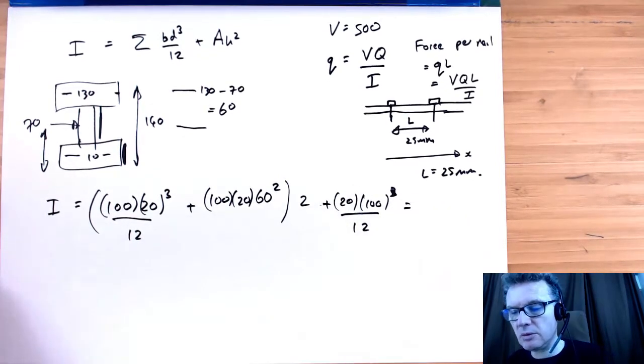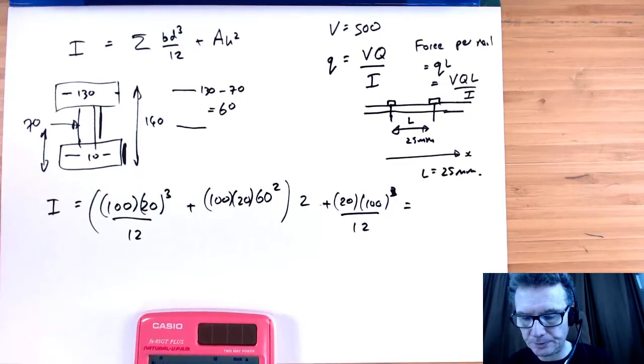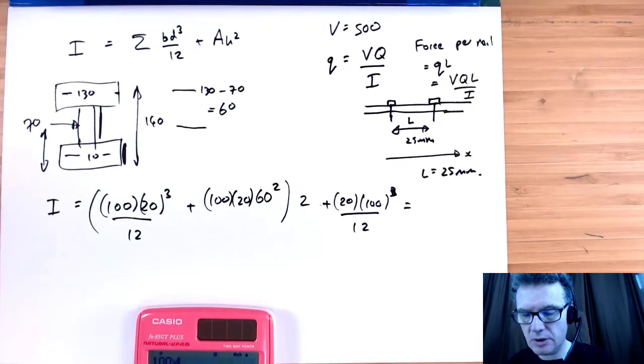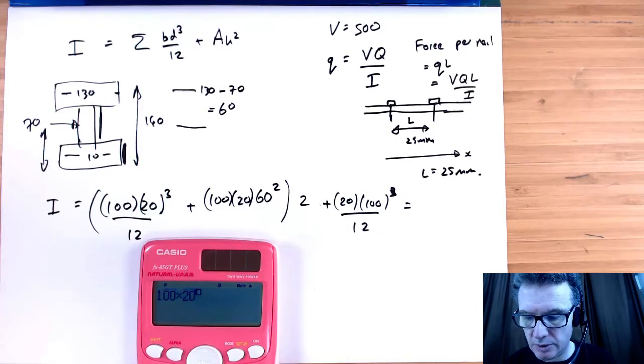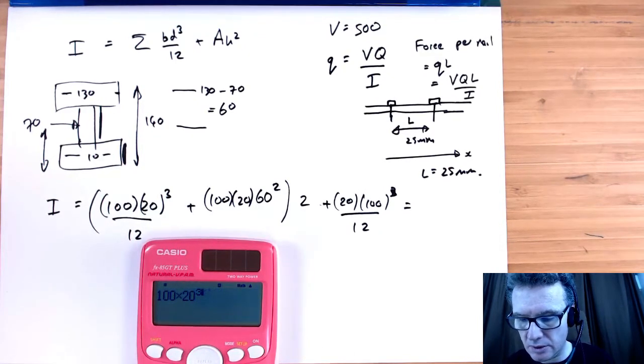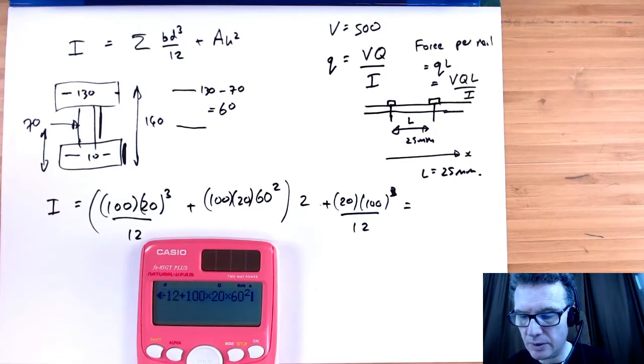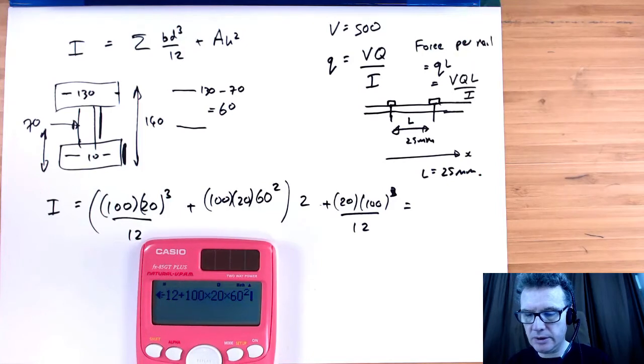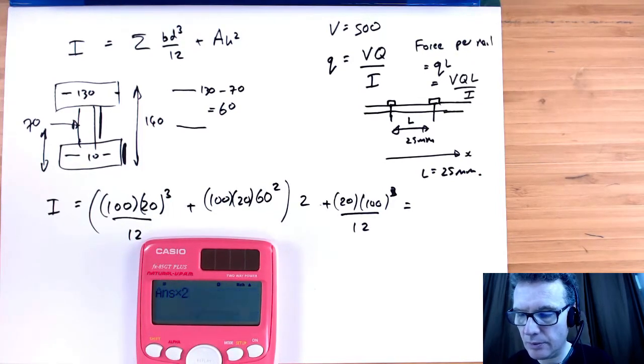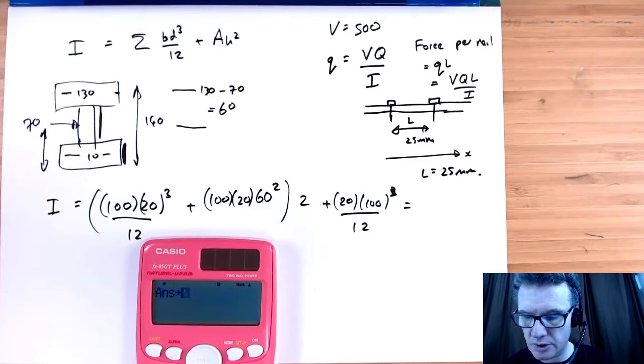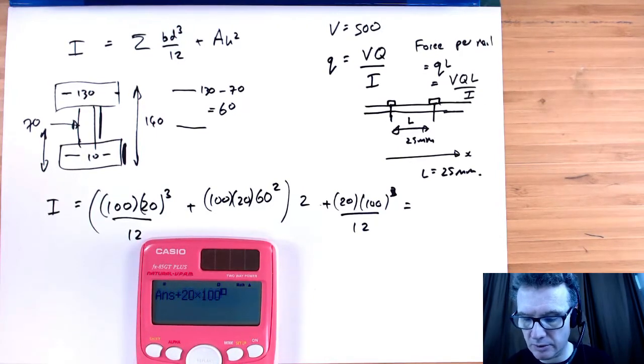So that equals, in millimeters to the power of 4: 100 times 20 to the power of 3 divided by 12, plus 100 times 20 times 60 squared. Let's multiply that by 2, plus 20 times 100 to the power of 3 divided by 12.